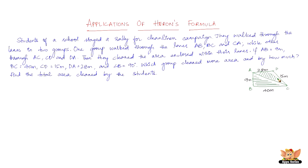That is within their lanes. Now if AB equals 9 meters, BC equals 40 meters, CD equals 15 meters, DA equals 28 meters, and angle B equals 90 degrees — so this is 90 degrees here — which group cleaned more area and by how much? Find the total area cleaned by both groups.